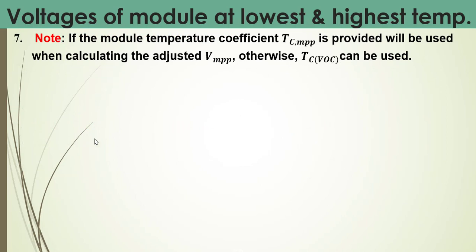Note: if the module temperature coefficient for maximum power point is provided in the datasheet, it should be used when calculating the adjusted voltage at maximum power point. Otherwise, we use the temperature correction factor for open circuit voltage. In this case, we don't have the TC for maximum power point, so we will use the TC for open circuit voltage.